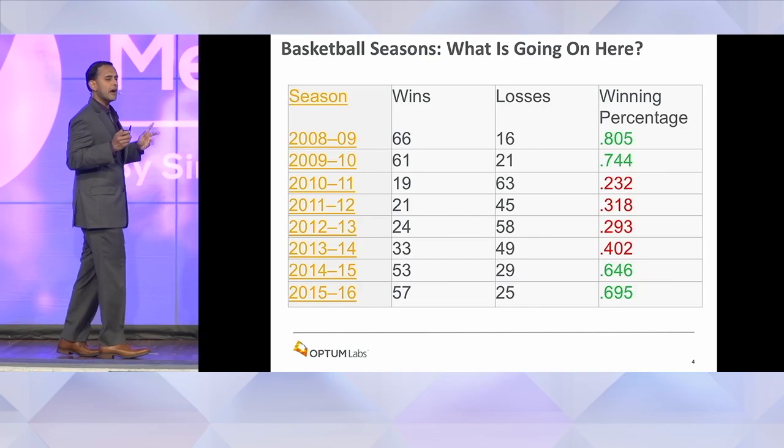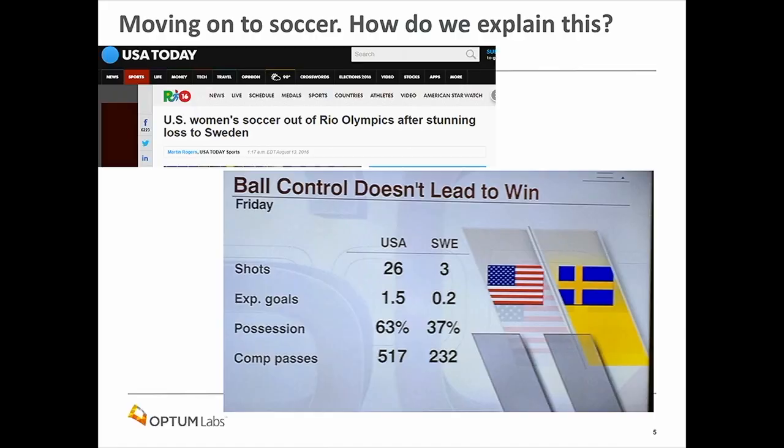This is sort of how we think about healthcare — we look for the single ingredient, the highest utilizer, the single way to improve health. Whereas a better analogy is the women's soccer team that played in the Olympics. The USA played Sweden in the semifinals: shots on goal, USA 26, Sweden 3. Expected goals 1.5. Possession, passes — all showed the US should have won, and yet they lost.